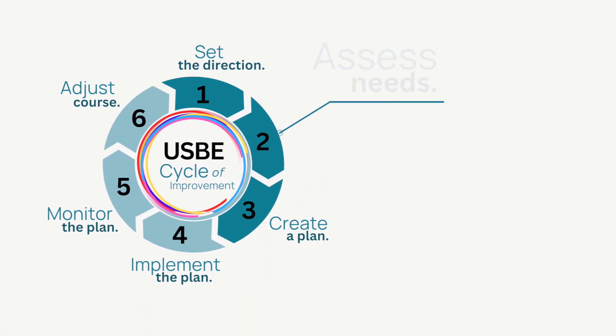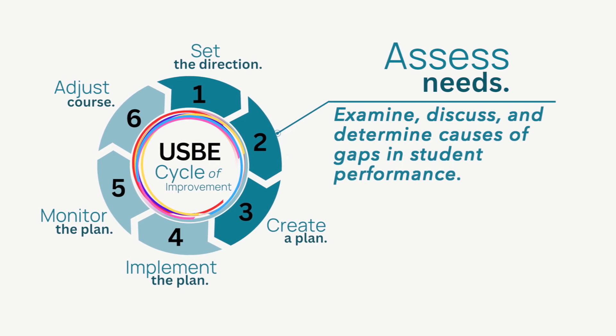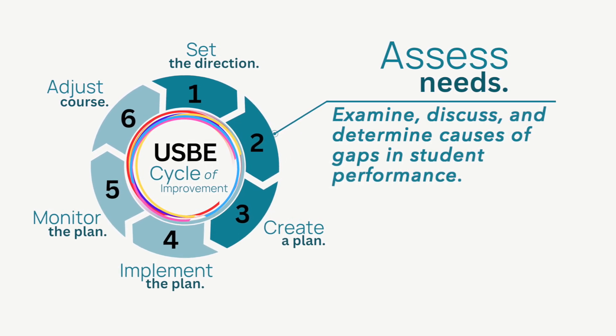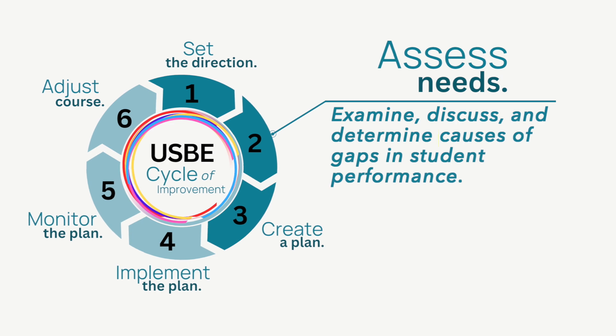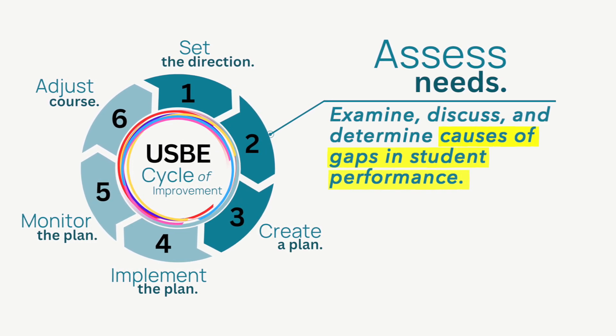The CNA RCA process is the second step in the USB-E's cycle of continuous improvement. The process provides the school an opportunity to examine, discuss, and determine the causes of inequities or gaps in student performance. To do so, the CNA RCA looks at a variety of qualitative and quantitative datasets to identify the strengths as well as opportunities for improvement.